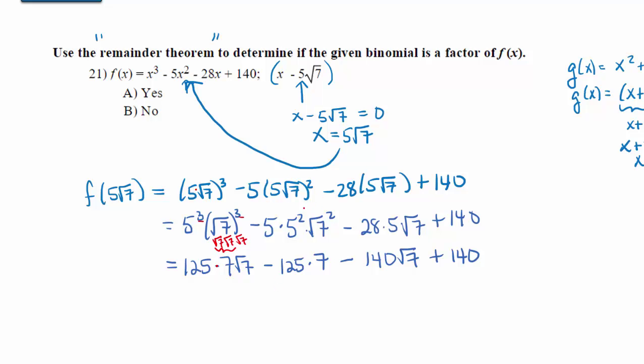Up here, we're going to square each part of the product 5 times the square root of 7, and we're going to get 5 times 5², or 25, which is going to give us 125, and √7 squared is just 7. Up here, we can multiply the 28 times the 5 to give us 140√7.